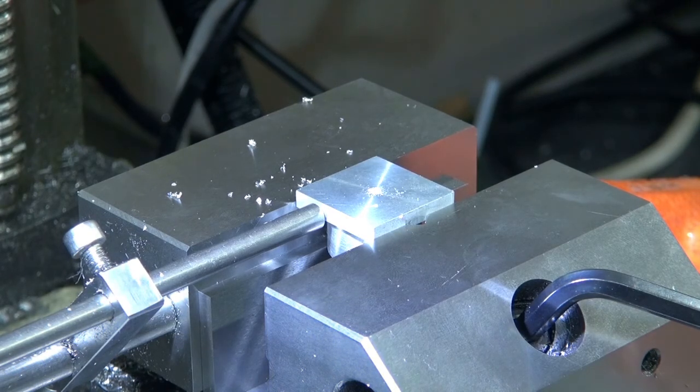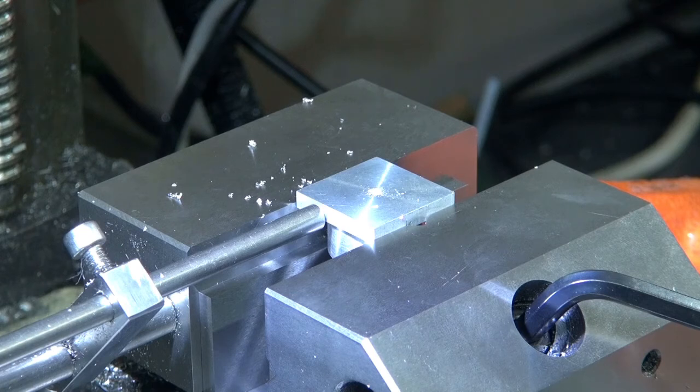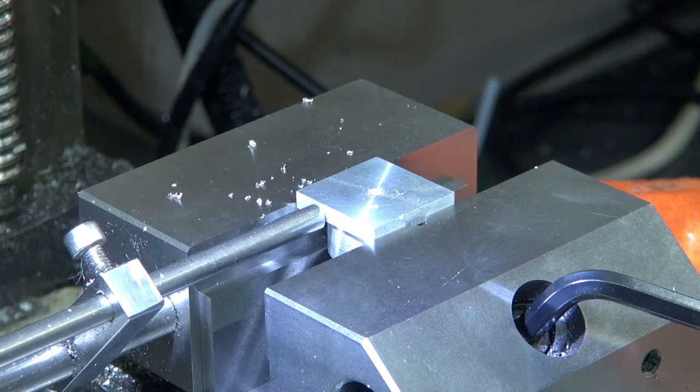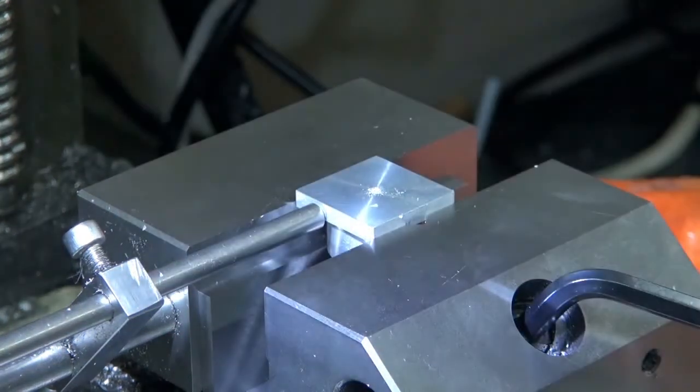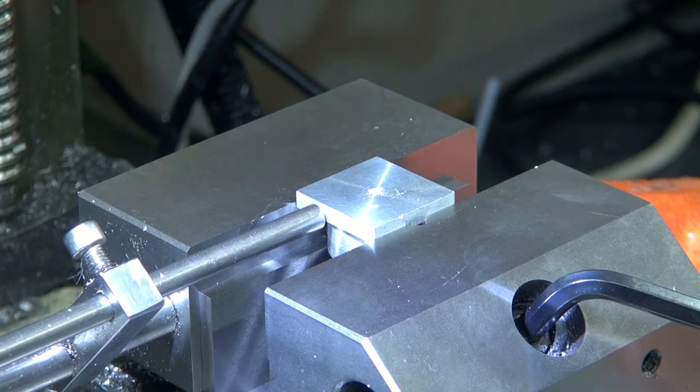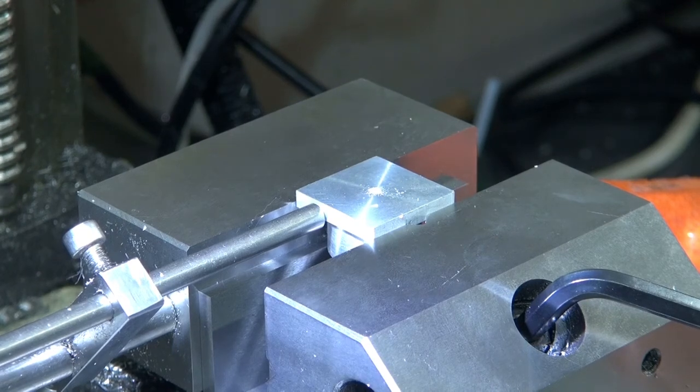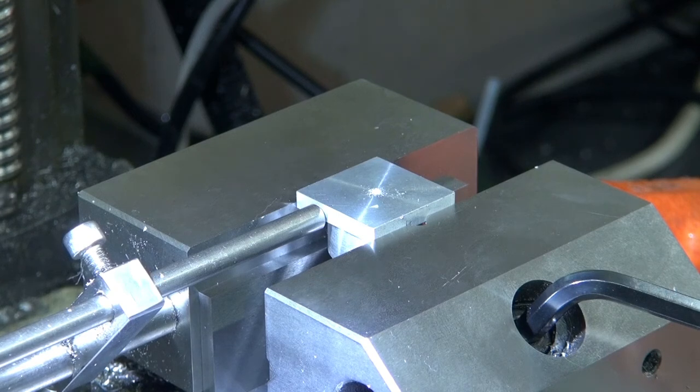The code is set now in Fusion 360, so every time I generate some G-code out of 360 it includes the tool change. So you specify on the drawing what tool you're using, and regardless of what's in the machine, it will always go to the top to change the tool. So it says please insert tool number 13, which we have in already. Press OK. The offsets for the tool are already set in Mach 3.